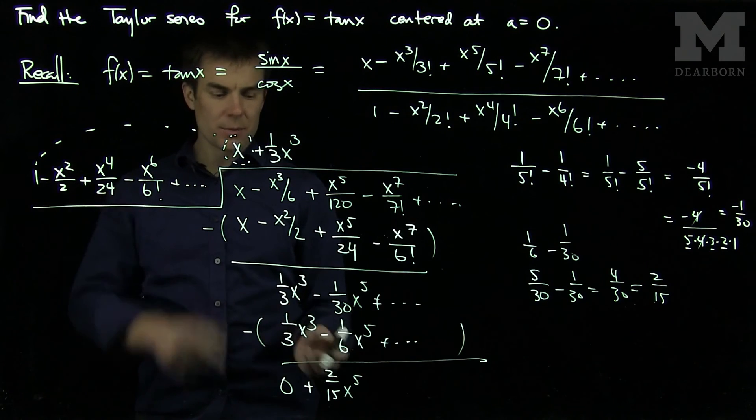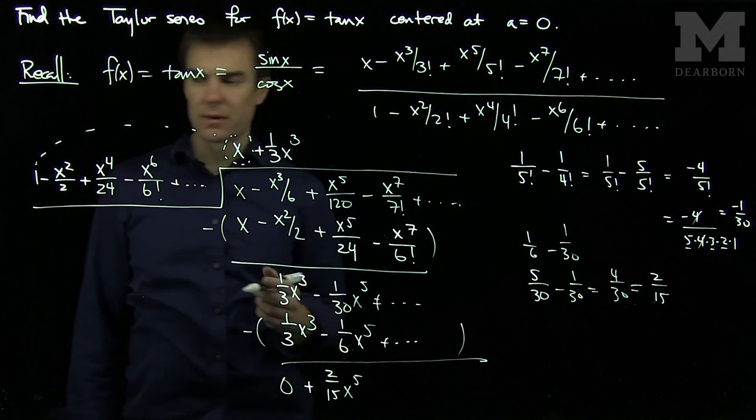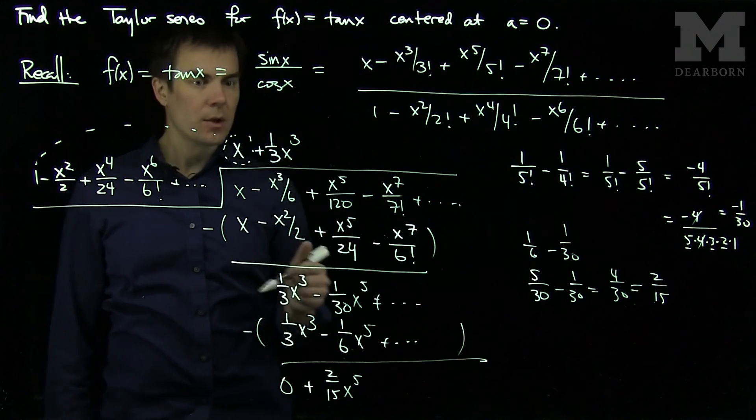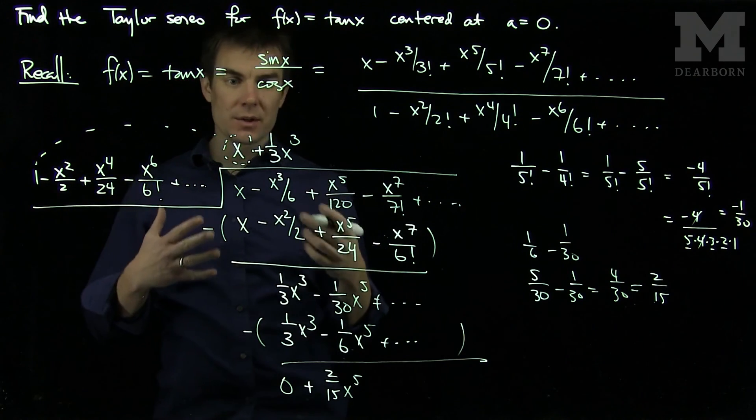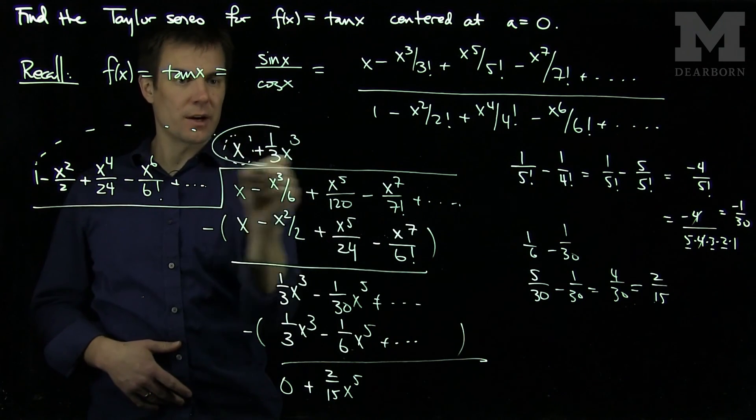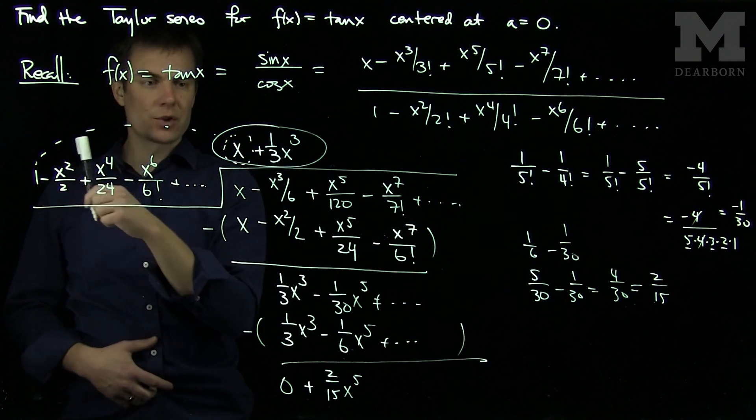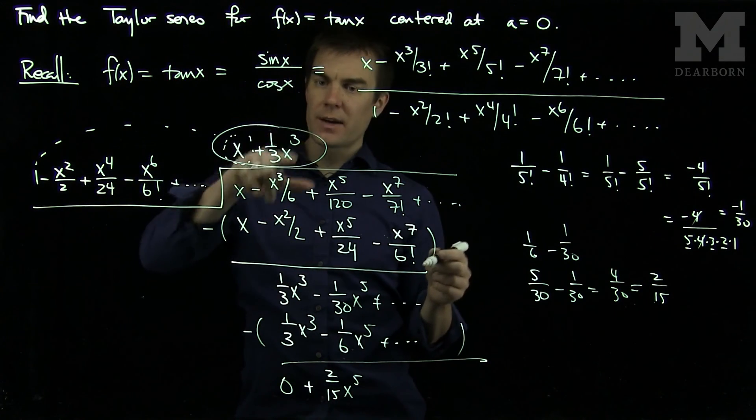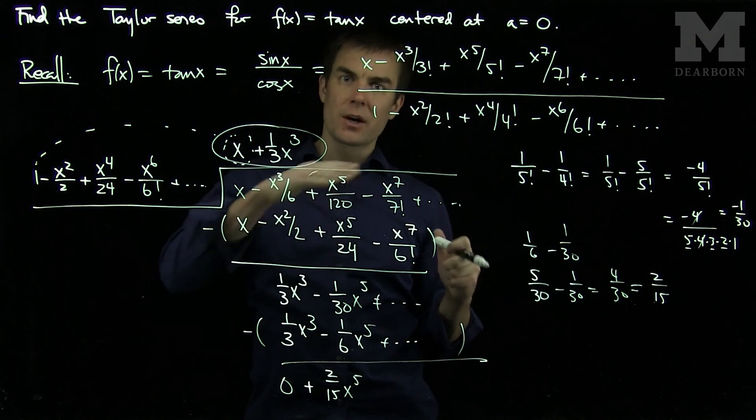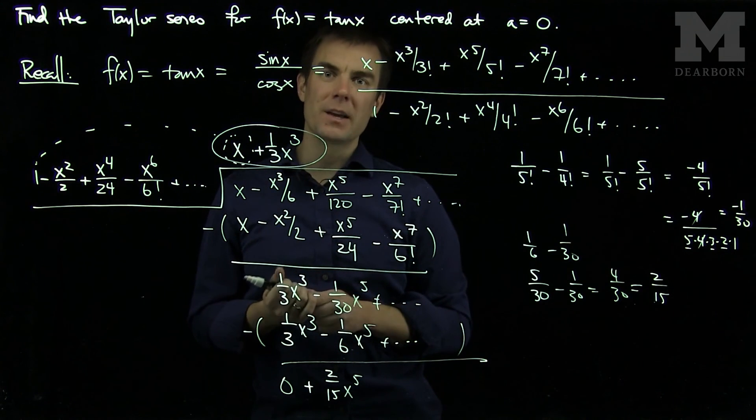And therefore we can see what the next term in the expansion will be. It will be positive 2 over 15 to get this next term to work out. So we can see that all the terms in this Taylor series expansion can be found by looking at the ratio of these two things. So by doing this subsequent division, we can find each of the subsequent terms, and we can just carry on this procedure indefinitely. Thank you very much.